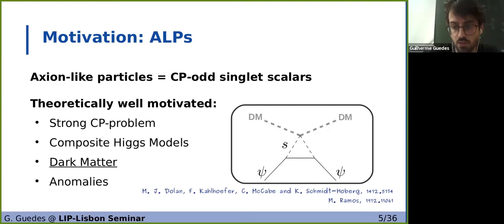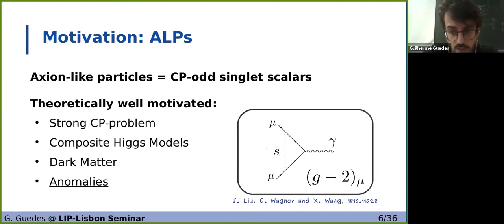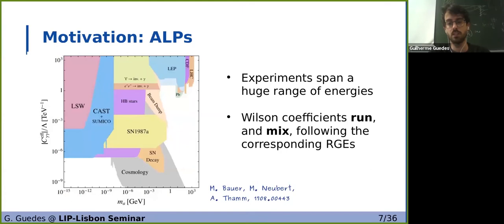In dark matter models, pseudo-scalars are sometimes considered to be the mediator between the dark sector and the standard model sector, since they allow suppression of the cross-section of direct detection processes, enabling evasion of strong constraints. There are also several anomalies which can be explained with pseudo-scalars, for example the g minus 2 of the muon. Given this wide motivation, the experimental program that searches for these particles covers a wide range of masses and couplings, and importantly, these experiments are performed at very different energy scales.